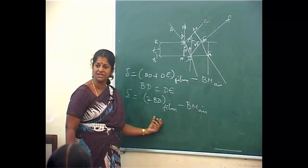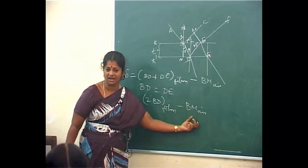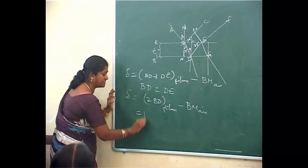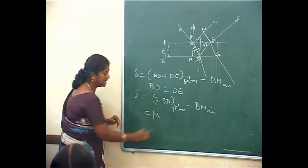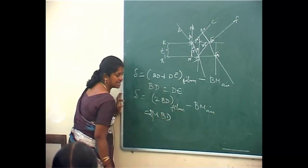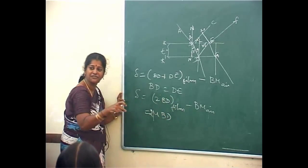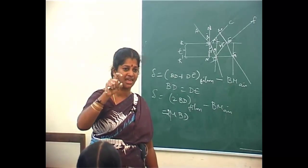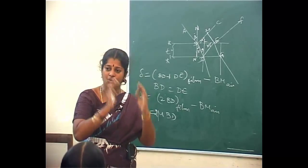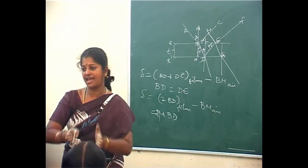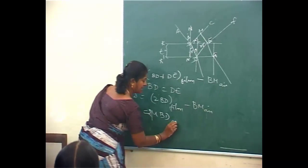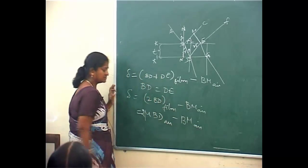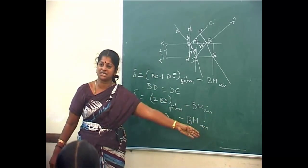I need to change the quantity in film to the same as that in air. What I will do: I will multiply the quantity in film with the refractive index of the film, mu, so that that term becomes equivalent in air. If I multiply with the refractive index, that quantity will be changed into the quantity in air — minus BM in air. Now I can simplify easily.